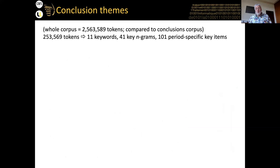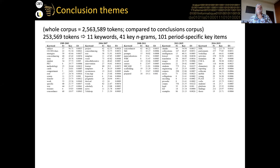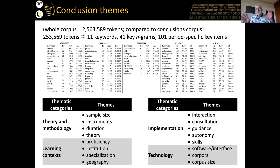Since we created a corpus, the whole corpus of all papers came to a total of 2.5 million tokens, and the subcorpus of just conclusion sections came to about a quarter of a million tokens. We looked at keywords and key n-grams for each time block, which allowed us to identify four groups of themes emerging from the conclusions corpus.